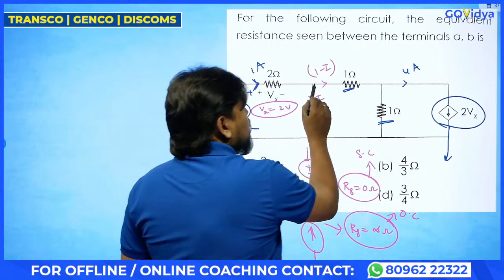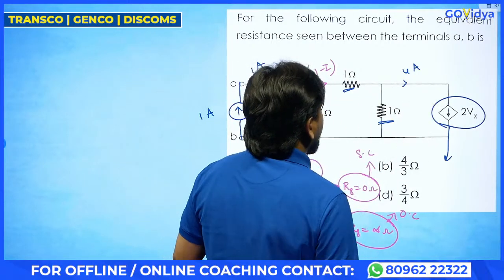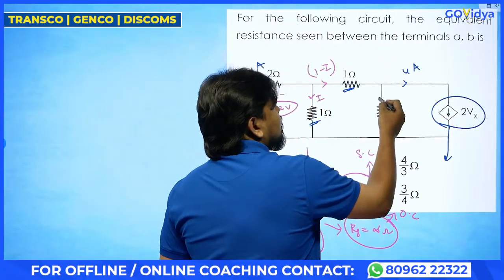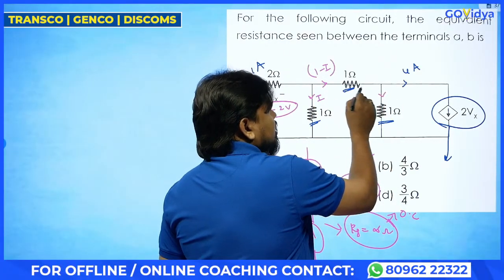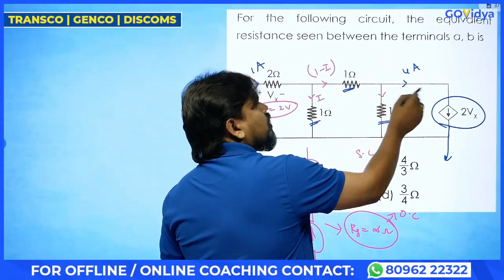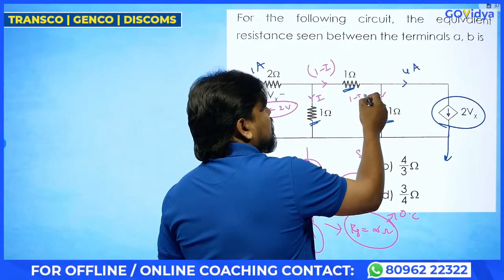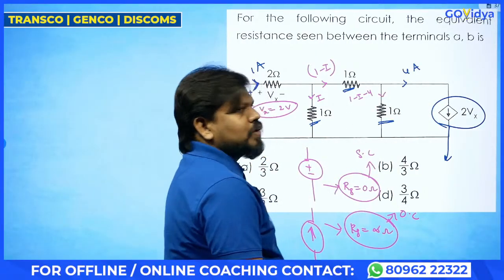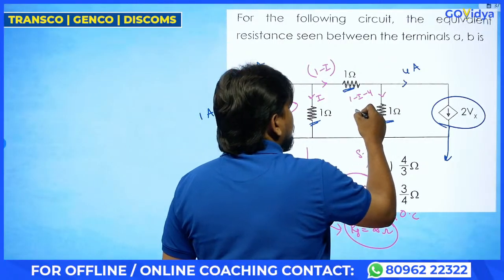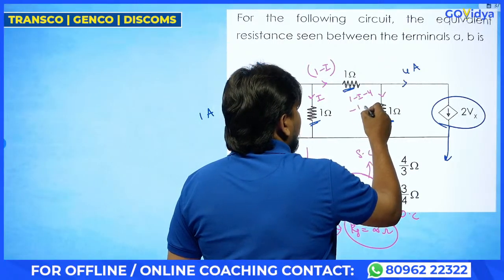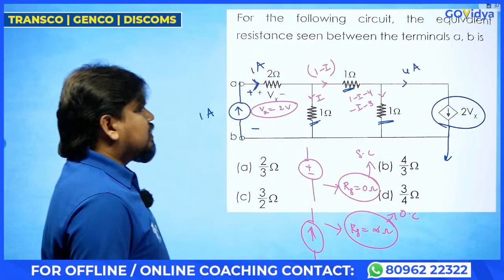So now 1 minus I current is incoming, 4 amperes is leaving. So what is the remaining current? 1 minus I current is incoming, 4 amperes is outgoing. So 1 minus I minus 4 — this will be the equivalent current. So then it will be minus I minus 3. So this is the current here.